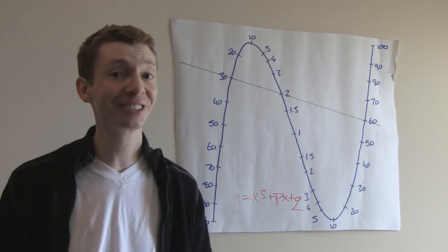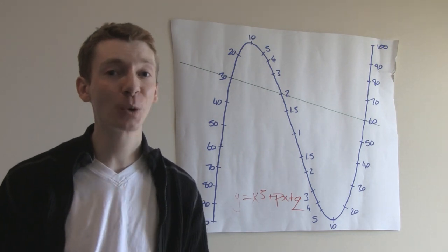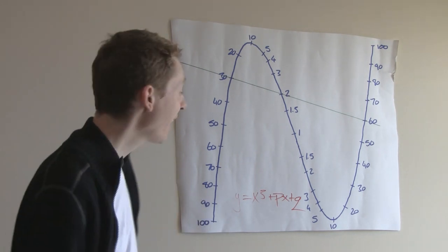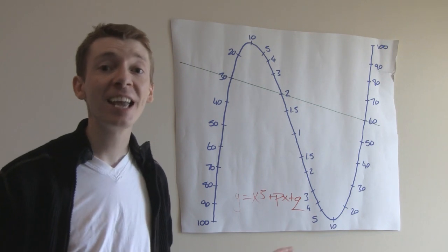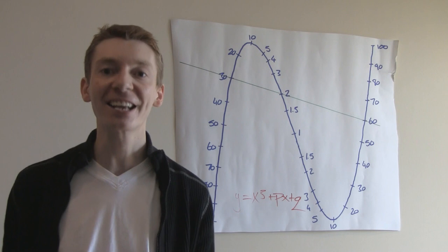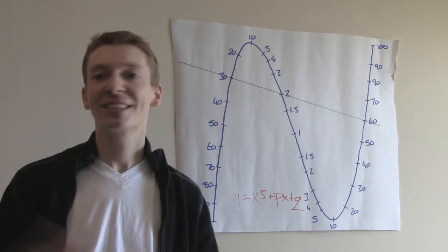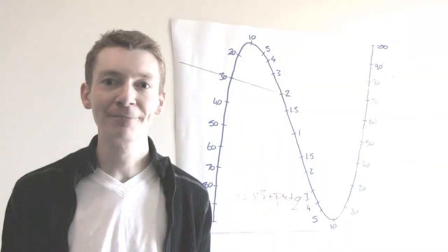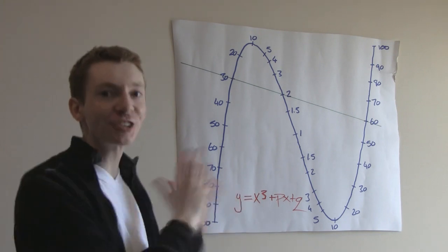The whole reason this works is because it has no x squared term. For one fact, a cubic curve like this is called a depressed cubic curve. So you've taken away its x squared term and then it just sits around the house sulking all day.